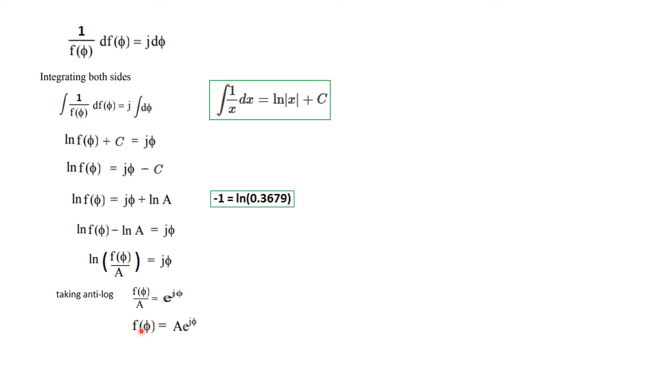And from here f(φ) can be written as A times e raised to the power jφ. Now to find the value of A, this function if you remember is cos φ plus j sin φ, so we have written it equal to this.